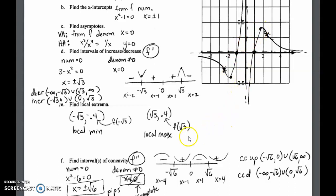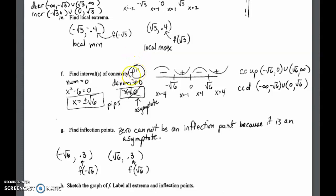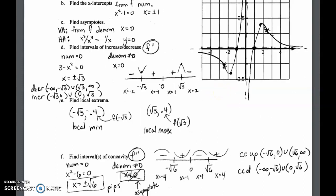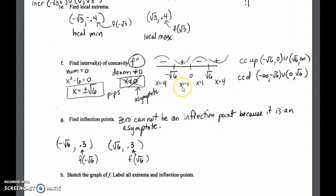Finally, we get into concavity, which has to do with the second derivative. For the second derivative, once again you set the numerator equal to zero and solve, then set the denominator equal to zero. The denominator zero can't be a potential inflection point because it's an asymptote, not a point. Solving gives potential inflection points at x = ±√6. We plot all three hyper-critical values: −√6, 0, and +√6, and test intermediate values like −4, −1, 1, and 4 in the second derivative, getting signs: negative, positive, negative, positive — concave down, concave up, concave down, concave up.